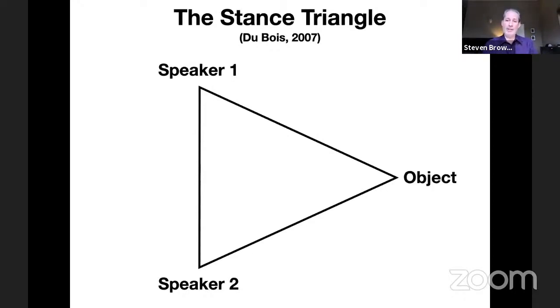It could be an idea, object, whatever, but this creates a triad between two speakers and this third thing which is the focus of their conversation. During the course of conversation, each speaker presents his or her affective stance towards the object—their emotional appraisals of the topic under discussion.